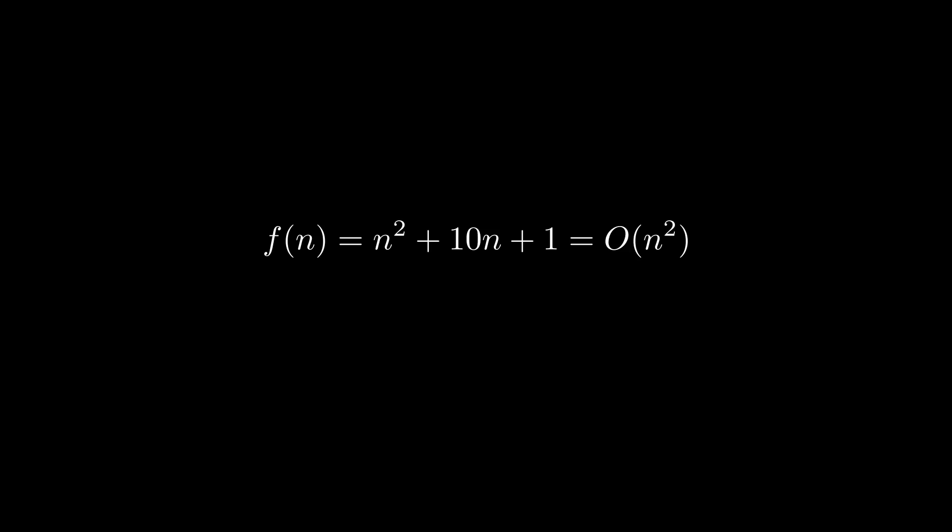This also means that if we have a polynomial, the order of the function is simply given by the term of highest degree. For example, even f(n) = n^100 + 10^8 · n^99 equals O(n^100), irrespective of how large the coefficients of lower degree terms are.